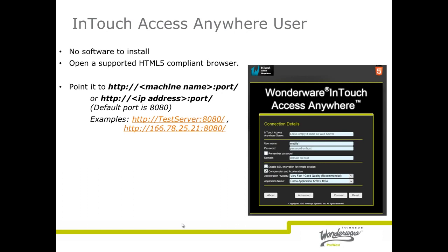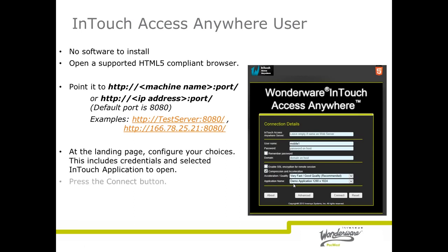This will connect them to a login page similar to the one seen on the right. Here the user will enter their login credentials, username and password. They have the option to select things associated with their connection, and then they'll select the application that they want to view remotely. From there, the last thing to do is hit connect.